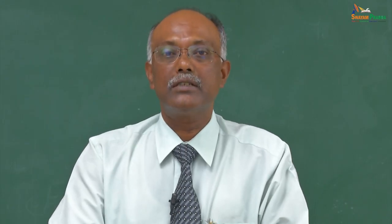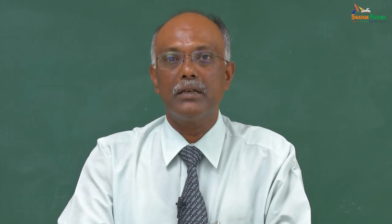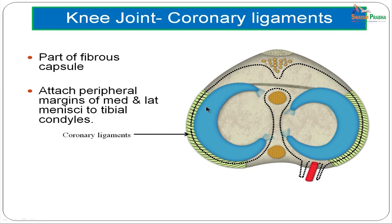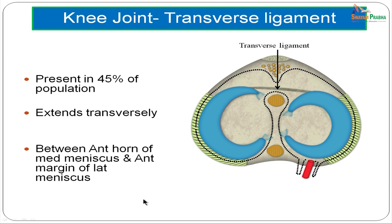The coronary ligaments are small ligaments connecting the peripheral margins of the medial and lateral menisci to the tibial condyles as well as to the joint capsule. The transverse ligament connects the anterior parts of both menisci — extending between the anterior horn of the medial meniscus and the anterior margin of the lateral meniscus.